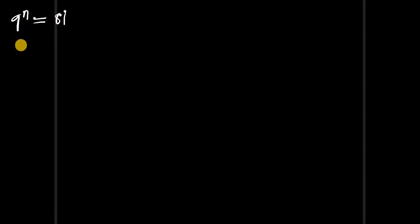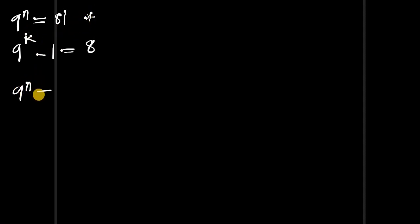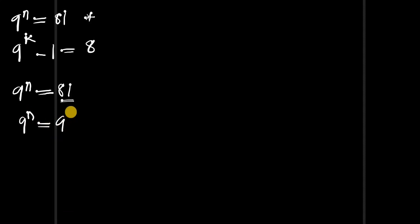Let's solve the first equation: 9 to the power of n equals 81. We need to find n such that 9 raised to that power gives 81. Since 81 is a perfect square, we write 9 to the power of n equals 9 to the power of 2. The bases are the same, so comparing exponents gives us n equals 2.